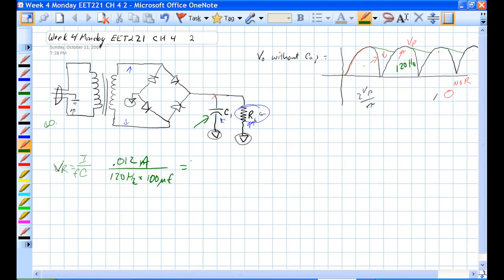If you get out your calculator and try this out, you'll find out the ripple is about 1 volt, right at 1 volt.